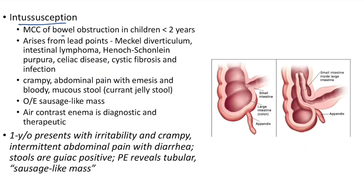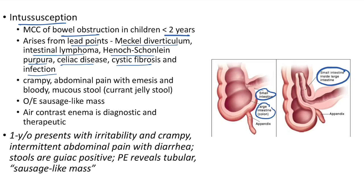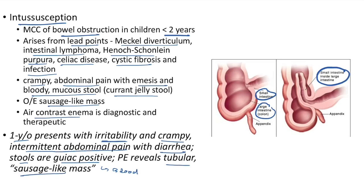Intussusception: most common cause of bowel obstruction in children less than 2 years of age. Lead points include Meckel's diverticulum, intestinal lymphoma, Henoch-Schönlein purpura, celiac disease, cystic fibrosis, and infection. Presents with crampy abdominal pain and bloody mucus stool (current jelly stool). On examination: sausage-like mass. Air contrast enema is both diagnostic and therapeutic. Case: 1-year-old with irritability and crampy abdominal pain; stools are guaiac positive; tubular sausage-like mass on examination.